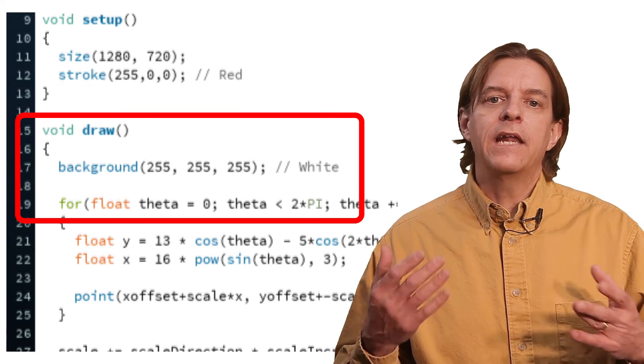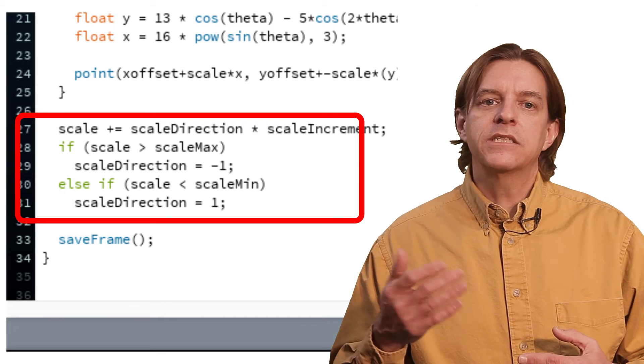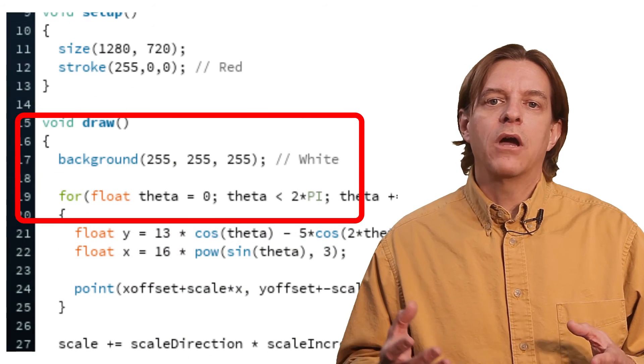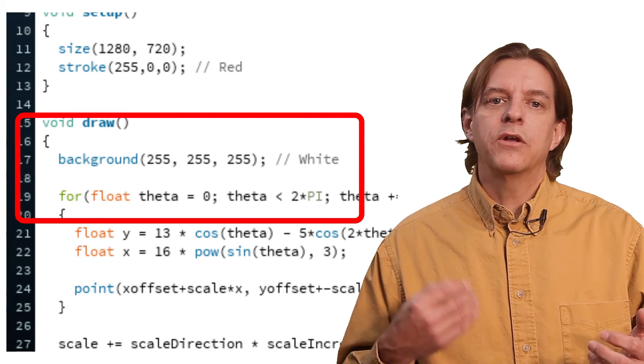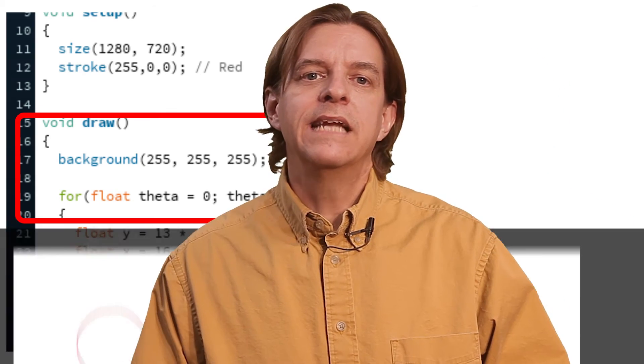So before running this, let's add a line to change the scaling each time the draw method is called and adjust a control parameter to keep the scale between a couple values. Finally, move the background call from setup into draw so it happens every time draw is called. This will clear our canvas each time. Now let's run this.